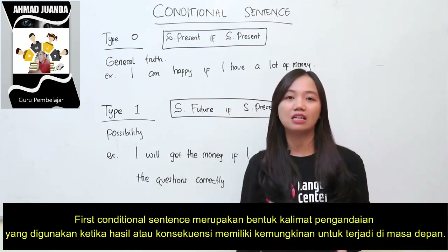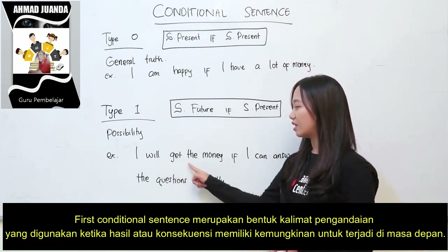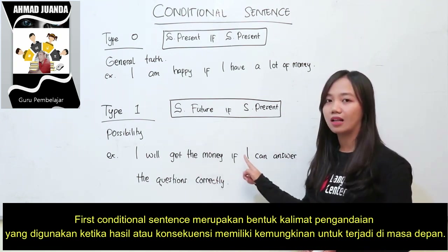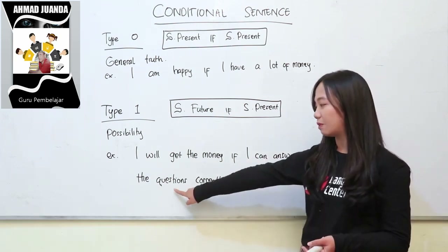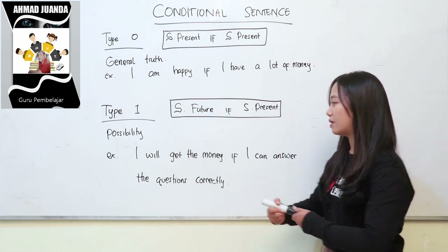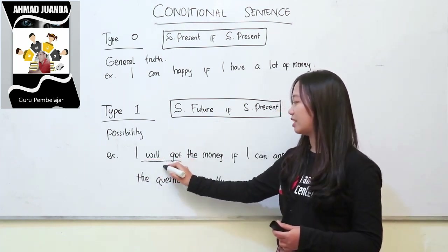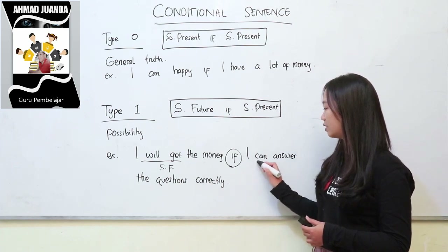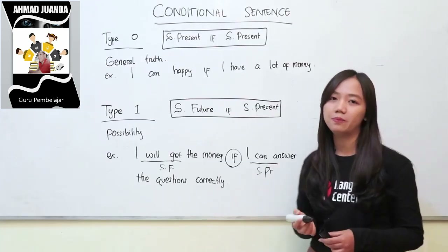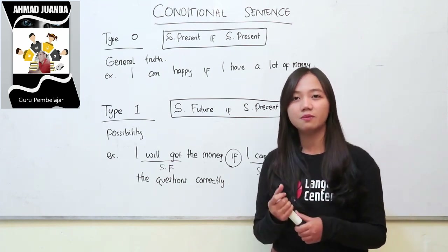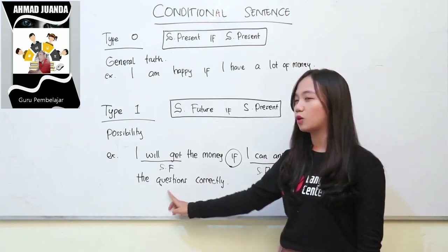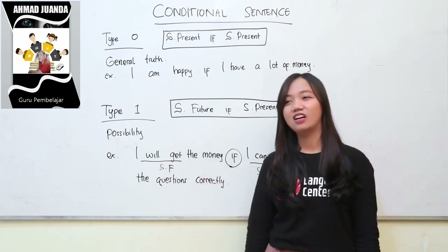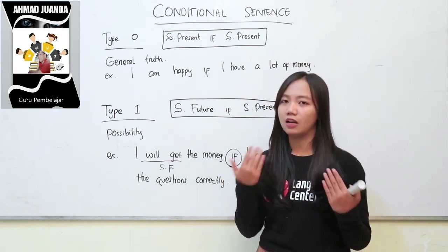For example, kalau kita lagi main kuis yang berhadiah: I will get the money if I can answer the questions correctly. Aku akan dapat uang jika aku dapat menjawab pertanyaan-pertanyaan dengan benar. Coba perhatikan di sini — ada kata 'will get', ini adalah tenses simple future, disambung dengan if, lalu diikuti oleh simple present. Boleh dibalik: If I can answer the question correctly, I will get the money. Atau bisa juga: I will go to Bali if I have a lot of money.